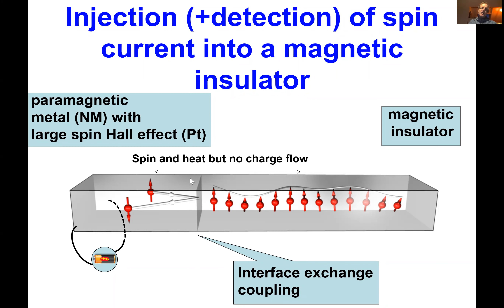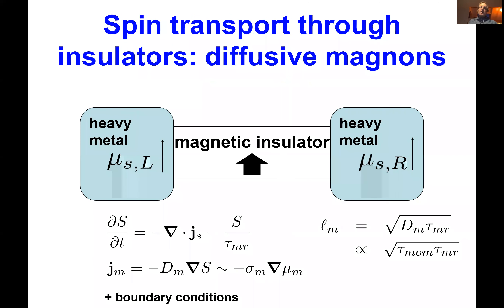This is how you make an electronic spin reservoir for biasing a magnetic insulator. The reverse process also happens: spin ℏ leaves the magnetic insulator, and is converted by the inverse spin Hall effect into a transverse charge current that you can detect simply with a voltmeter.